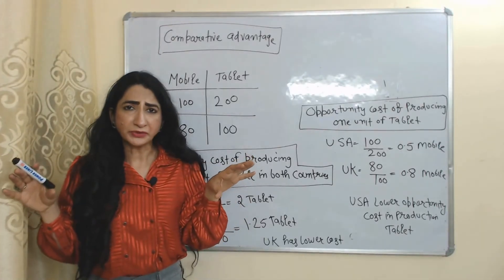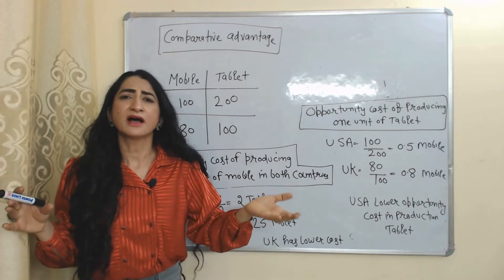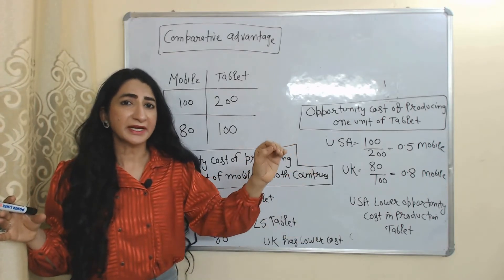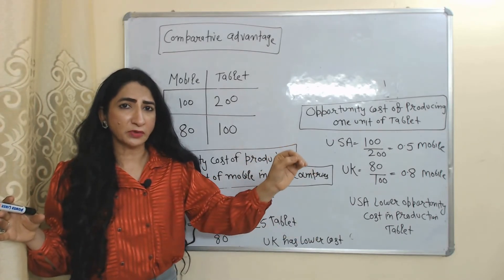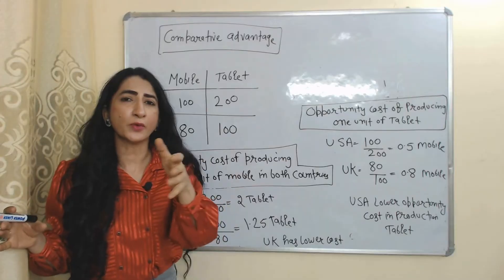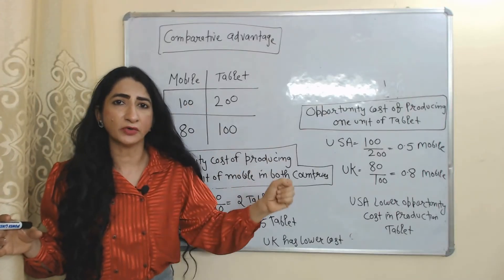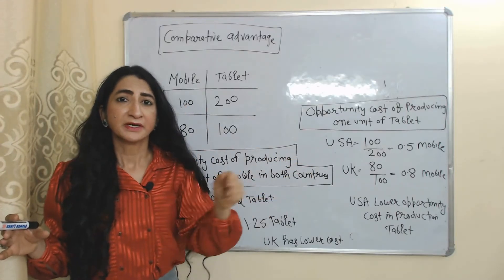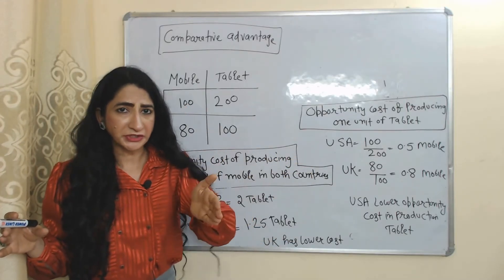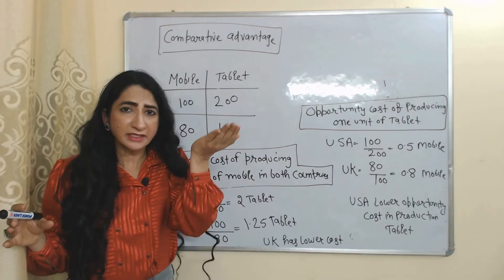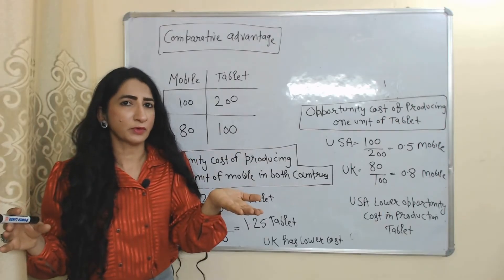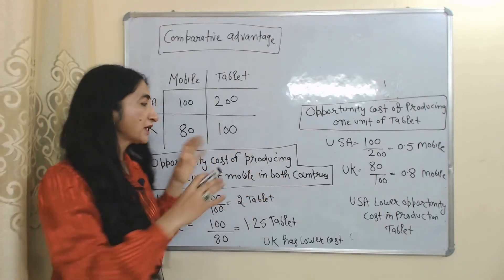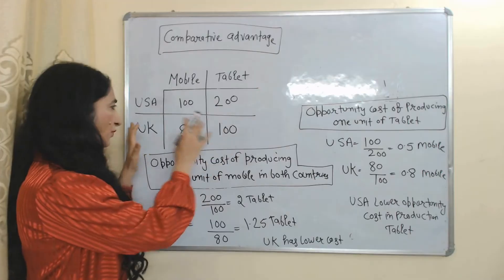According to this theory, a country should increase production and export of those goods in which they have lower opportunity cost, but reduce production and increase import of those goods in which they have higher opportunity cost.